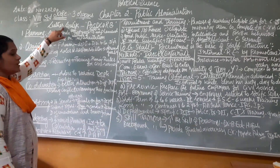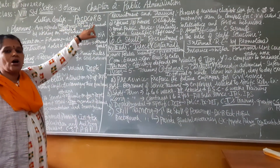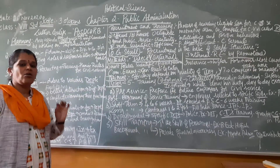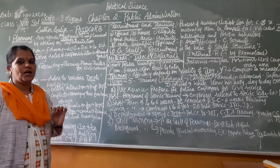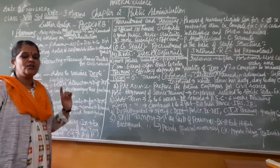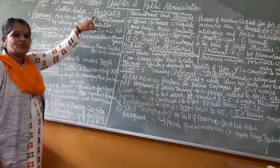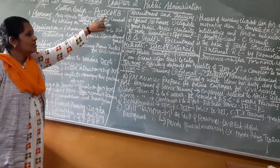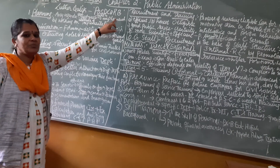Luther Gulick explains the scope of public administration using the word POSDCORB. This word doesn't have any meaning by itself, but each letter describes a function of public administration. P stands for planning, O for organization, S for staffing, D for directing, CO for coordinating, R for reporting, and B for budgeting.